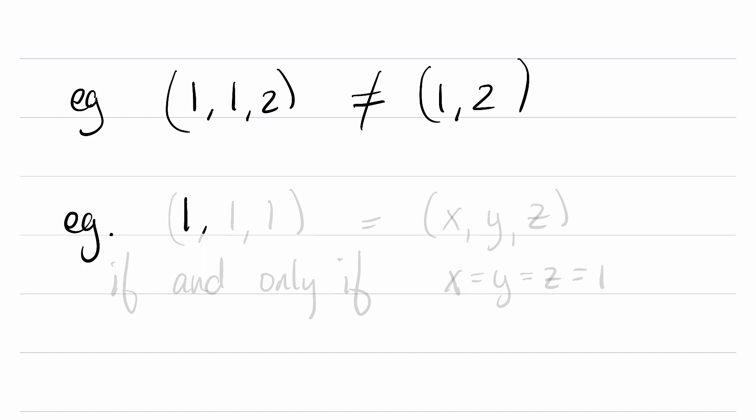Another example: the list (1, 1, 1). Say I claim that this was equal to the list (x, y, z). This happens if and only if, as in it happens precisely when and only when, x is 1, y is 1, and z is 1. They're all 1.